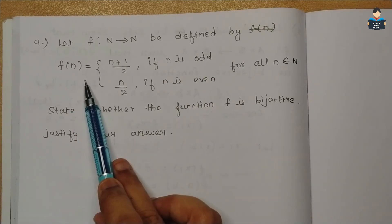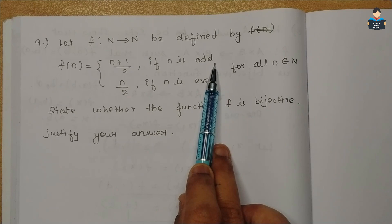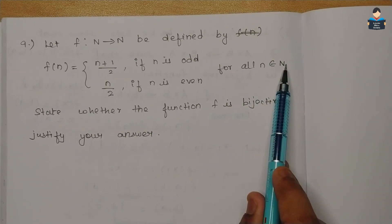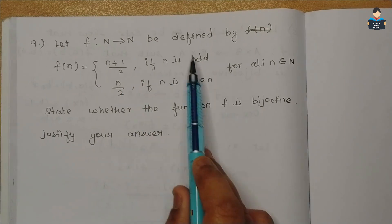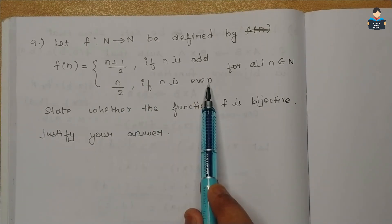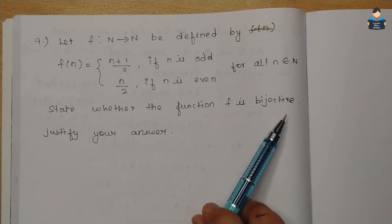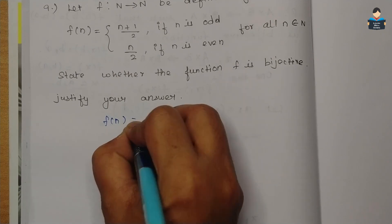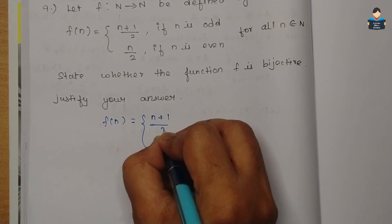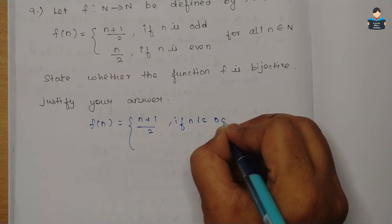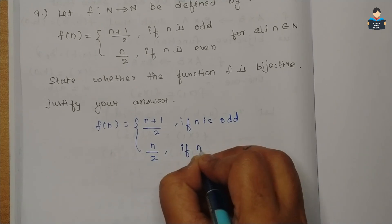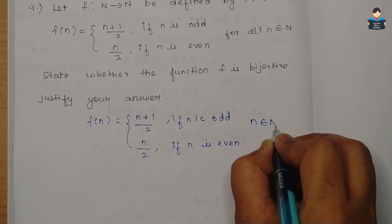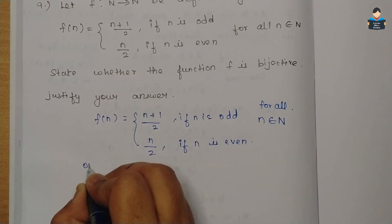Next question: f(n) = (n+1)/2 if n is odd, and n/2 if n is even, for all n belonging to natural numbers. State whether the function f is bijective and justify your answer. First, we check one-to-one.